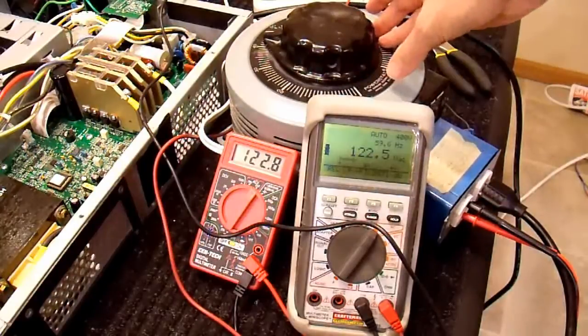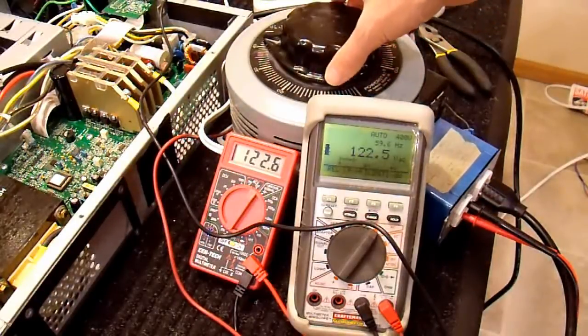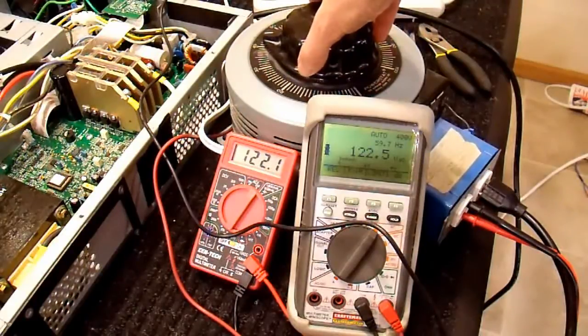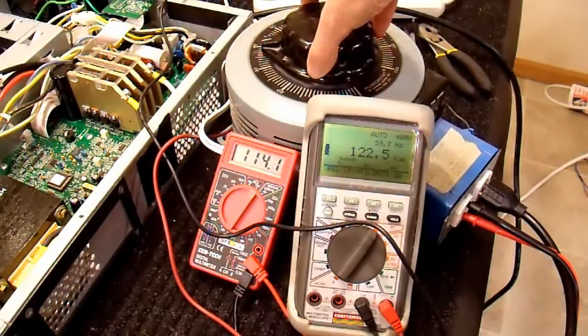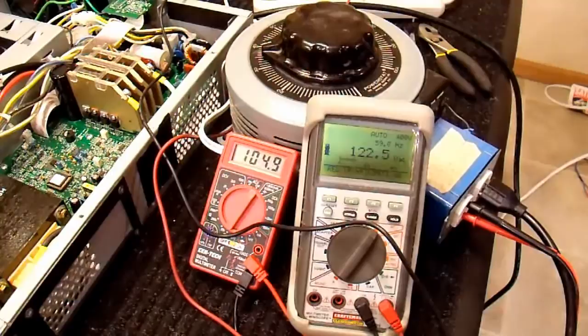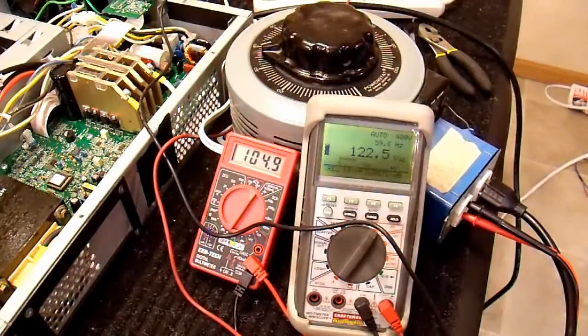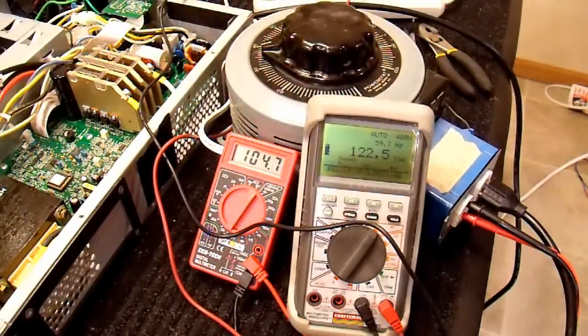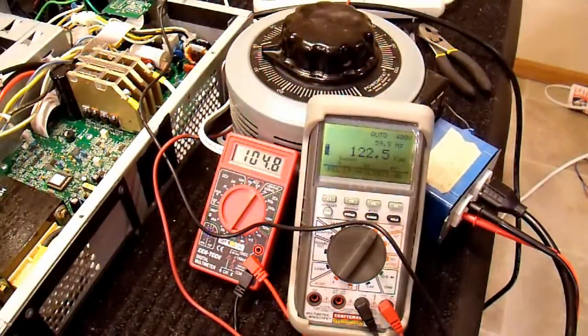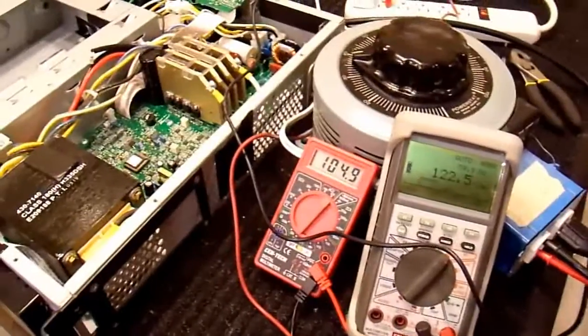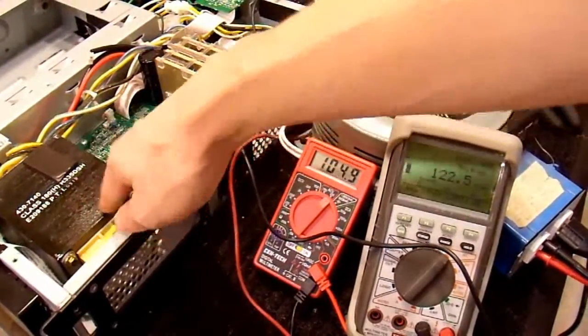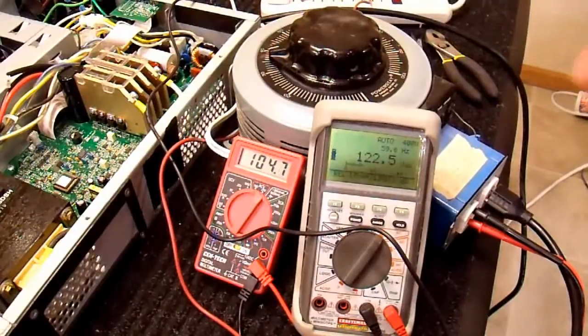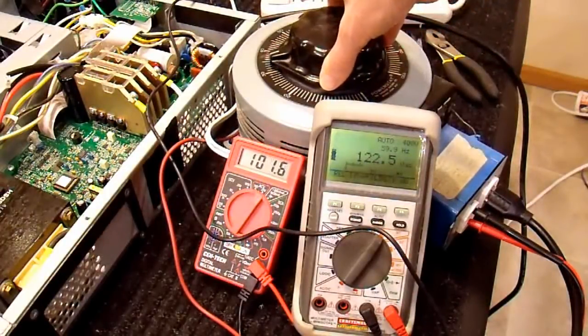So I demonstrated this earlier in an older video, my back UPS video, but if I turn this down far enough, it will click. And it just switched to a different tap on the transformer. 105 volts is what's going into the UPS. The UPS thinks that's too low, so it's switching to a different tap on this transformer to boost the voltage up to back up to around 120 volts. Turn it down again, it'll switch to another tap.